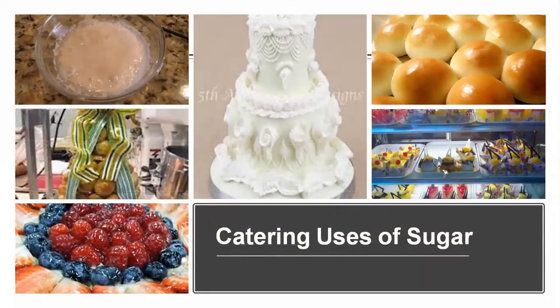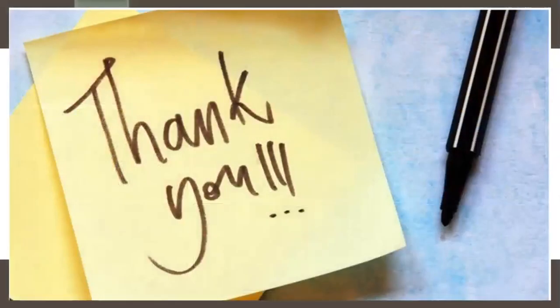These are some of the uses in different baking and dessert applications. On bread, sugar gives a nice beautiful color. The yeast has been given food in the form of sugar. There is also pulled sugar. Glazes in the form of sugar are given to desserts or foods.